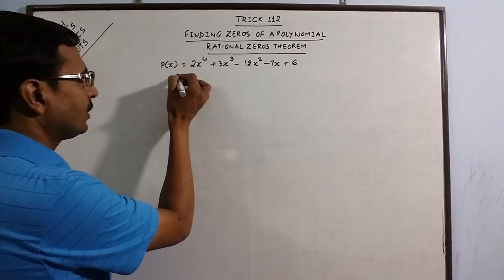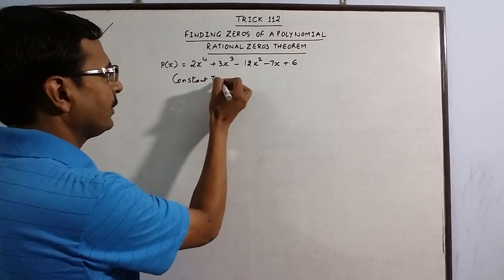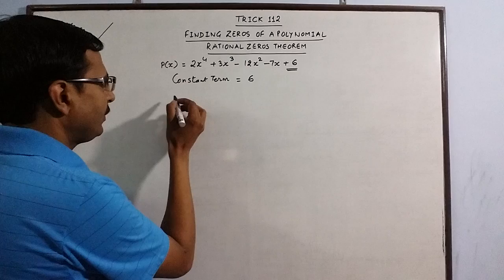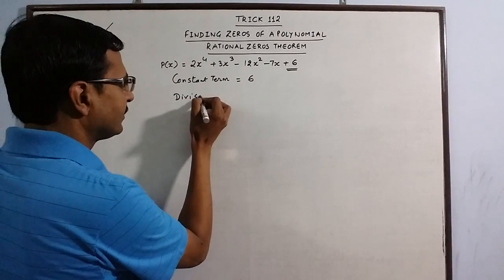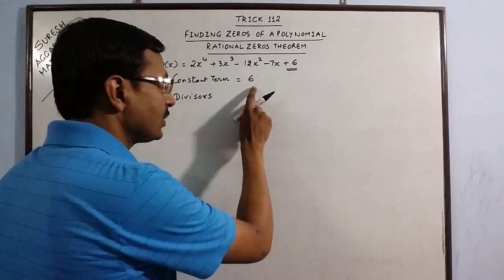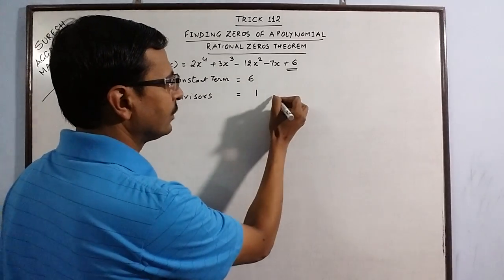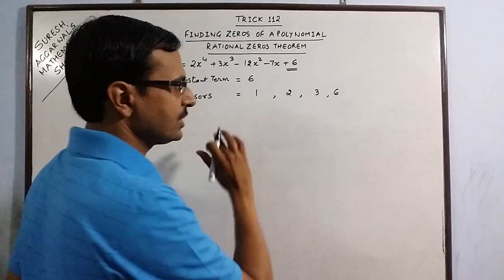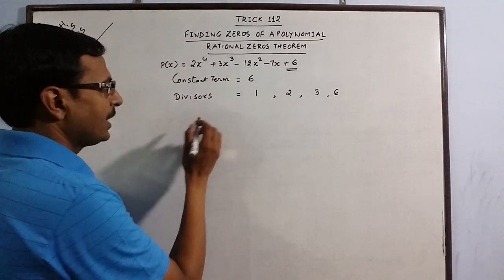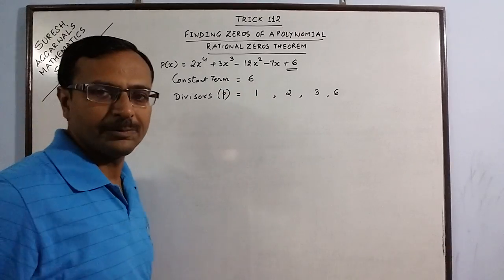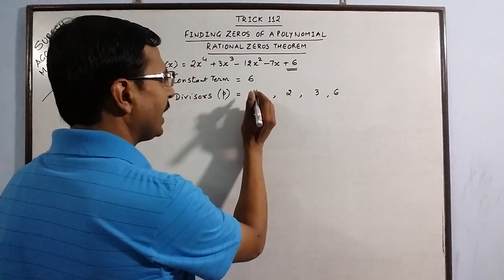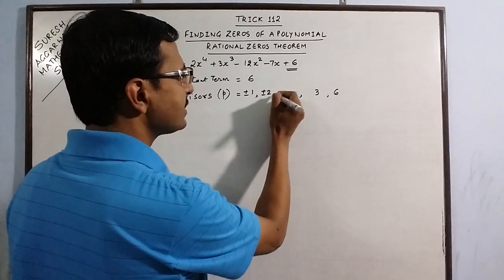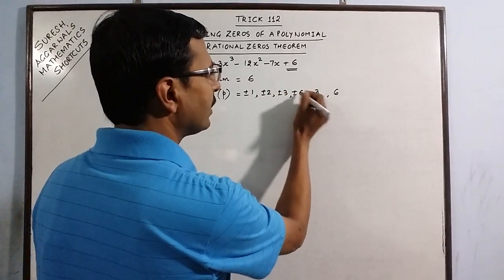First of all, we need to see the constant term. In this polynomial, the constant term is 6. We will find all the divisors of 6 — the divisors of this constant term. The divisors are 1, 2, 3, and 6. These four divisors we label as P, and they can be in plus-minus form: ±1, ±2, ±3, and ±6. These are the possible values of P.